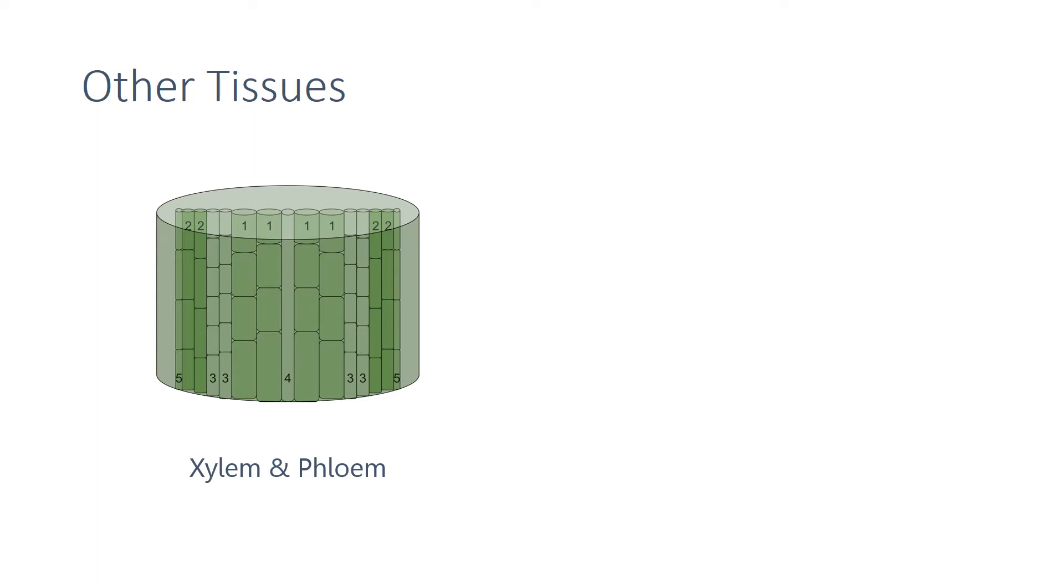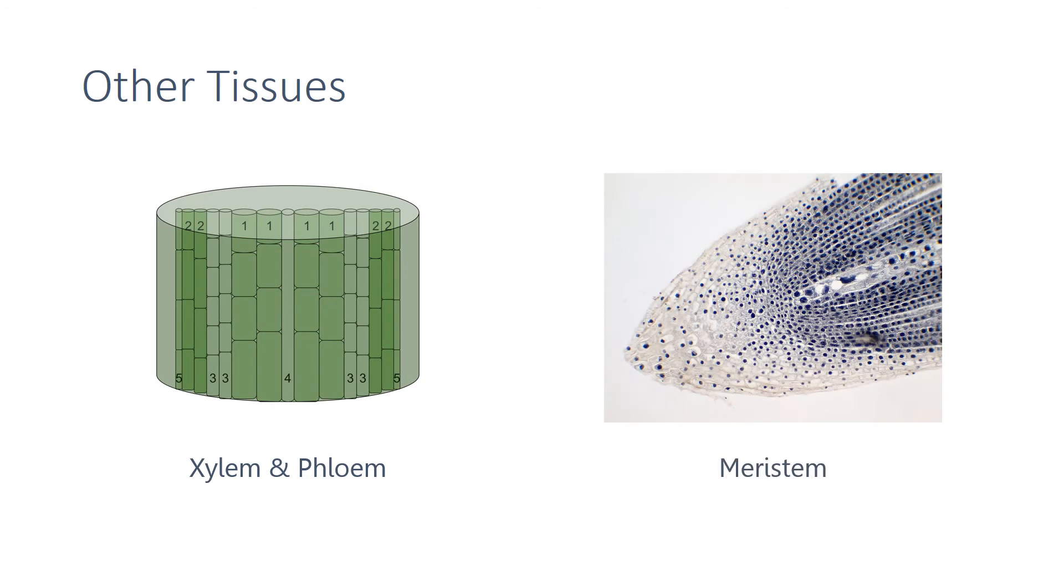The final plant tissue you need to know about is called the meristem. This is made up of rapidly dividing plant cells and it's where the plant can grow and cells can differentiate to form all the other types of cells that are required.